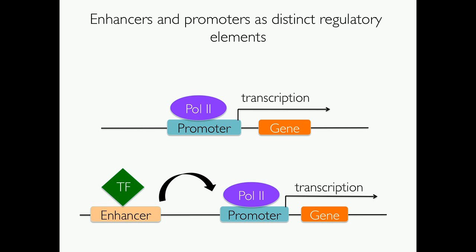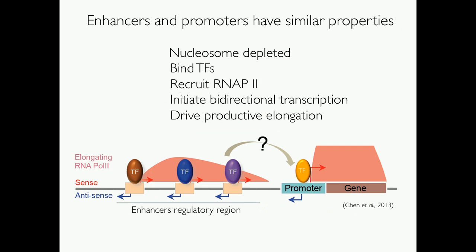Even though promoters and enhancers are distinct regulatory elements with different functions, research in our lab and in other organisms has shown they share similar properties: both are nucleosome depleted, both are able to bind transcription factors and recruit RNA-Pol2, and as shown by the red and blue arrows, both elements are able to initiate bidirectional transcription and can drive productive elongation, as seen from the elongating Pol2.